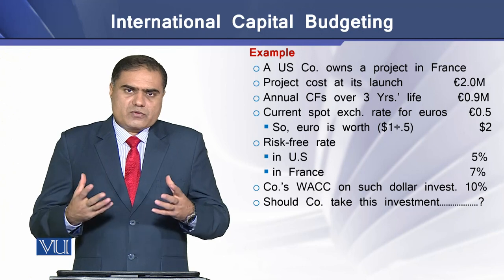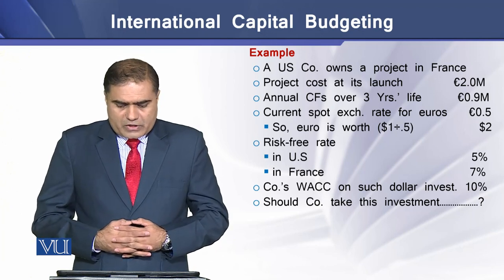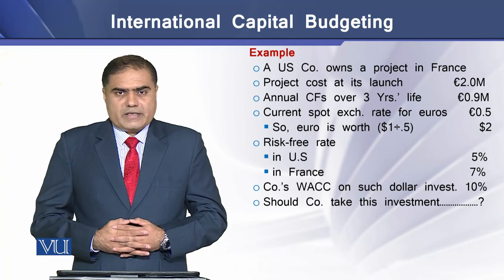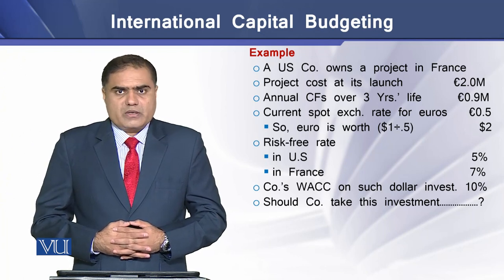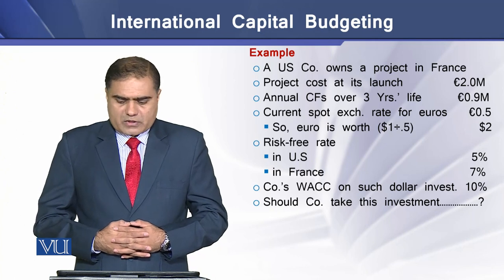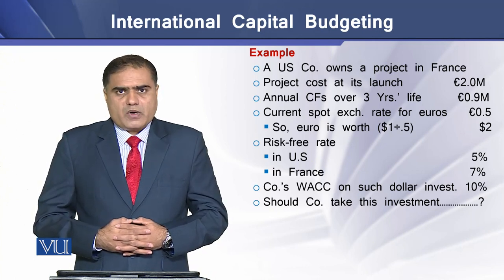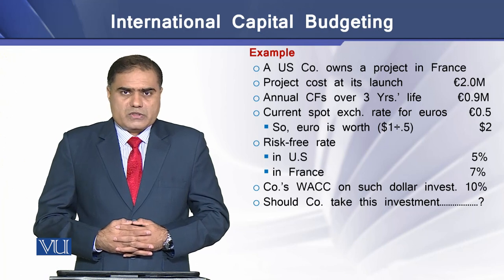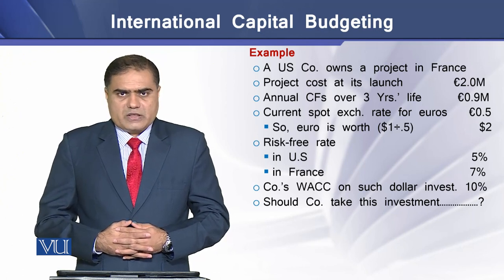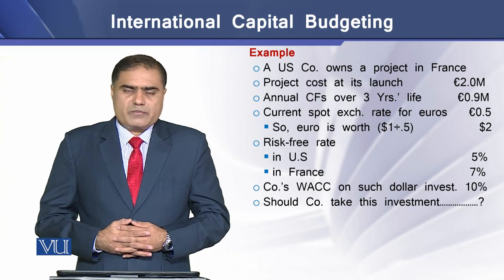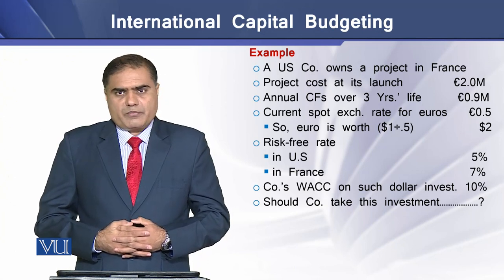To understand the mechanics of these two approaches, we have an example. We assume that there is a US company that owns a project in France. The project cost at its launch is 2 million euros and annual expected cash flows over the three-year life of the project are 0.9 million euros per year. The current spot exchange rate for the euro is 0.5 euro per dollar, so the euro is worth $2. The risk-free rate for the US is 5% and for France it is 7%. The company's weighted average cost of capital for this type of dollar investment is 10%.